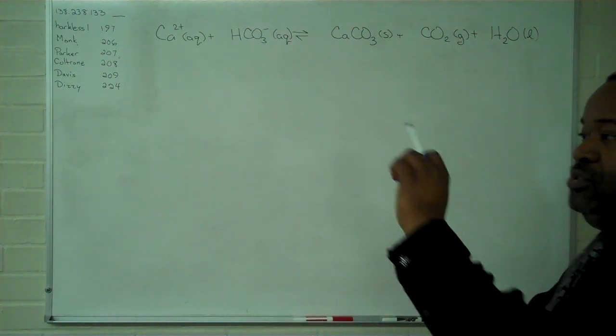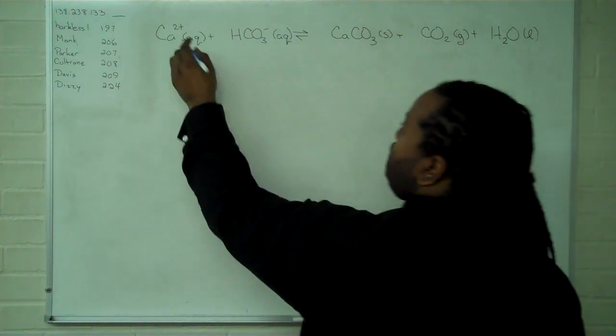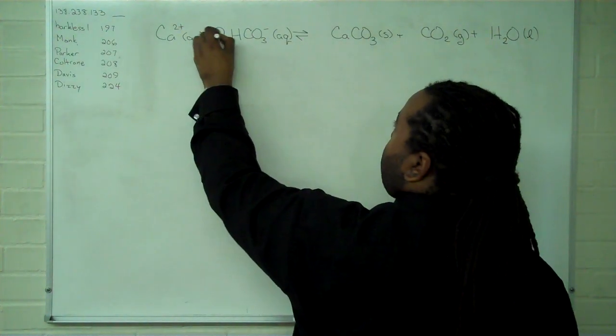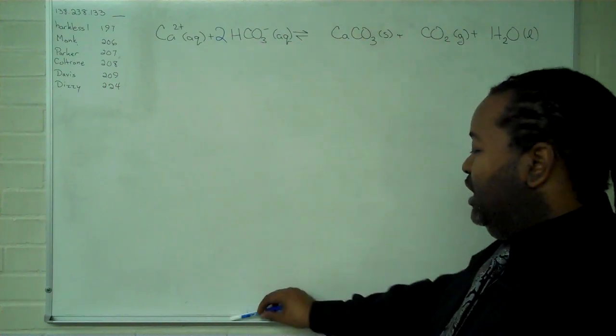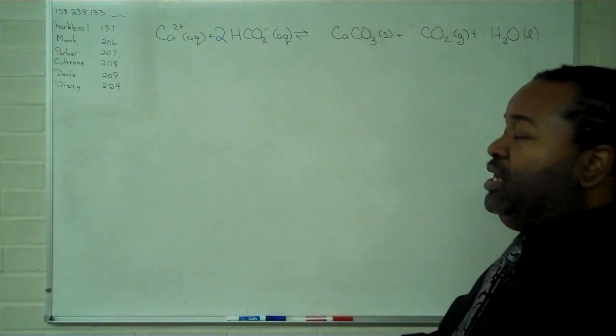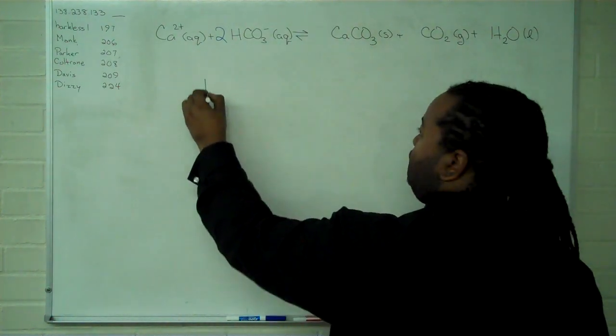So the first step, balance, we'll use blue to write in the coefficients. We need a 2 here. This balances out both charge and mass. And now that we have a fully balanced reaction, we can write out the Kc expression.